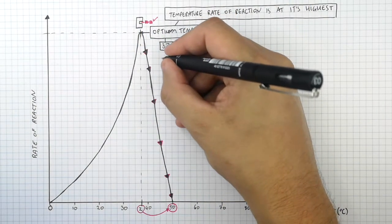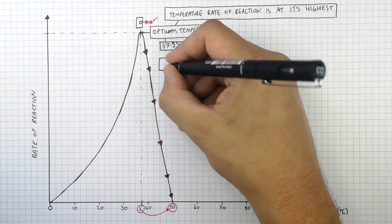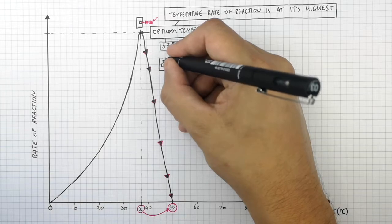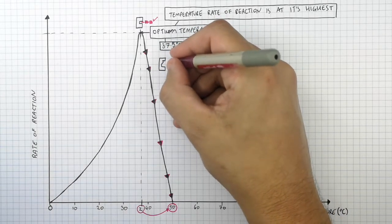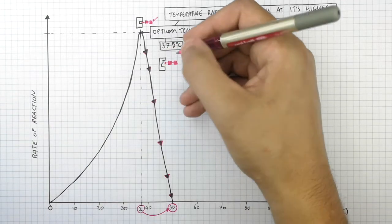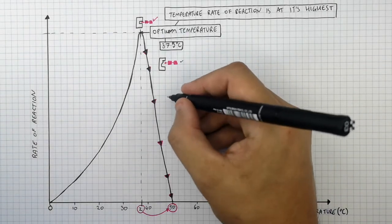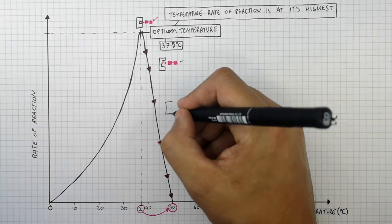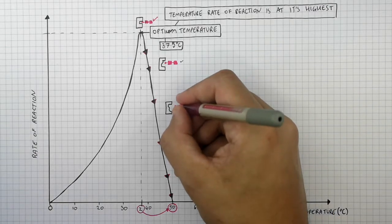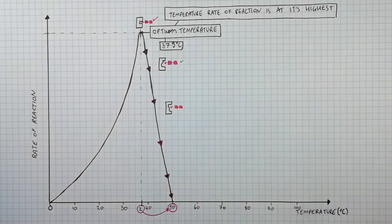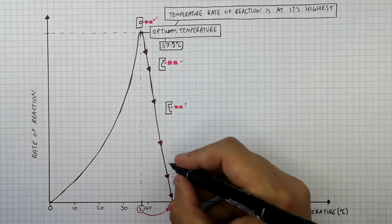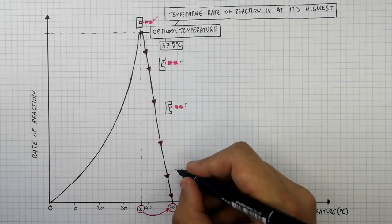If you increase the temperature above the optimum, the enzyme's active site begins to denature, which means the enzyme's active site changes shape. Therefore, the substrate doesn't bind the active site as well — it will still bind it, but the rate of reaction won't be as fast. As you increase the temperature further, the enzyme's active site denatures even more, so the substrate can't bind the active site as well. Therefore, less product is produced and the rate of reaction decreases.